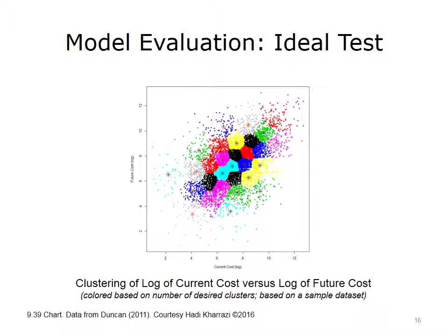Data classification methods can be useful to reduce the dimensionality of population health data. For example, clustering methods can be used to find similar denominators of a population for a given list of variables. This diagram shows a scatter plot of log-transformed current cost versus log-transformed future cost of a given population denominator. The automated clustering method has found a number of clusters, identified by various colors.